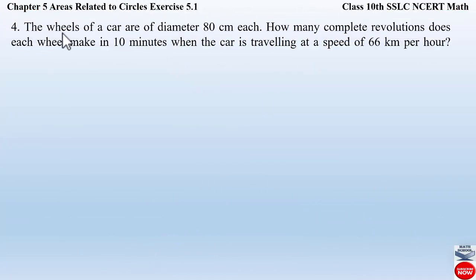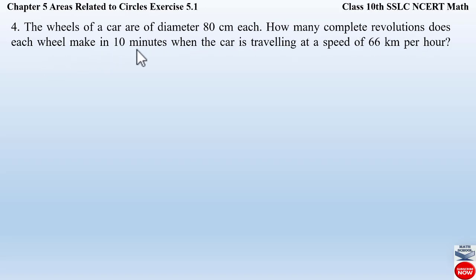Question number 5 from Exercise 5.1, Chapter 5: Areas Related to Circles. The question states: The wheels of a car are of diameter 80 centimeters each. How many complete revolutions does each wheel make in 10 minutes when the car is traveling at the speed of 66 kilometers per hour?